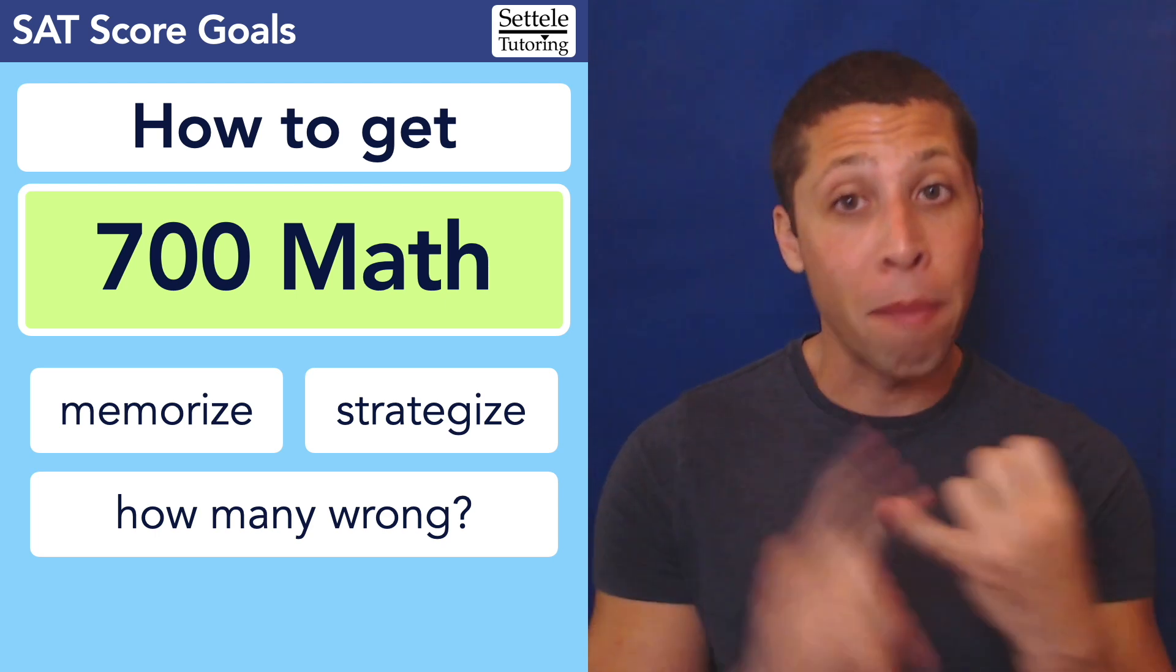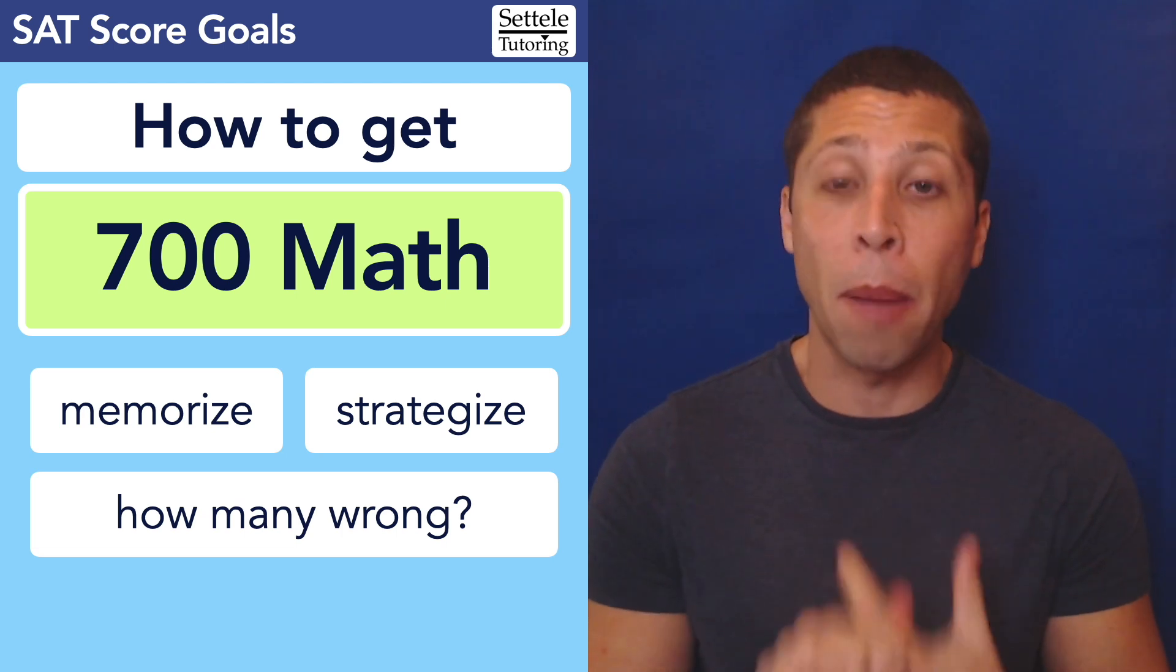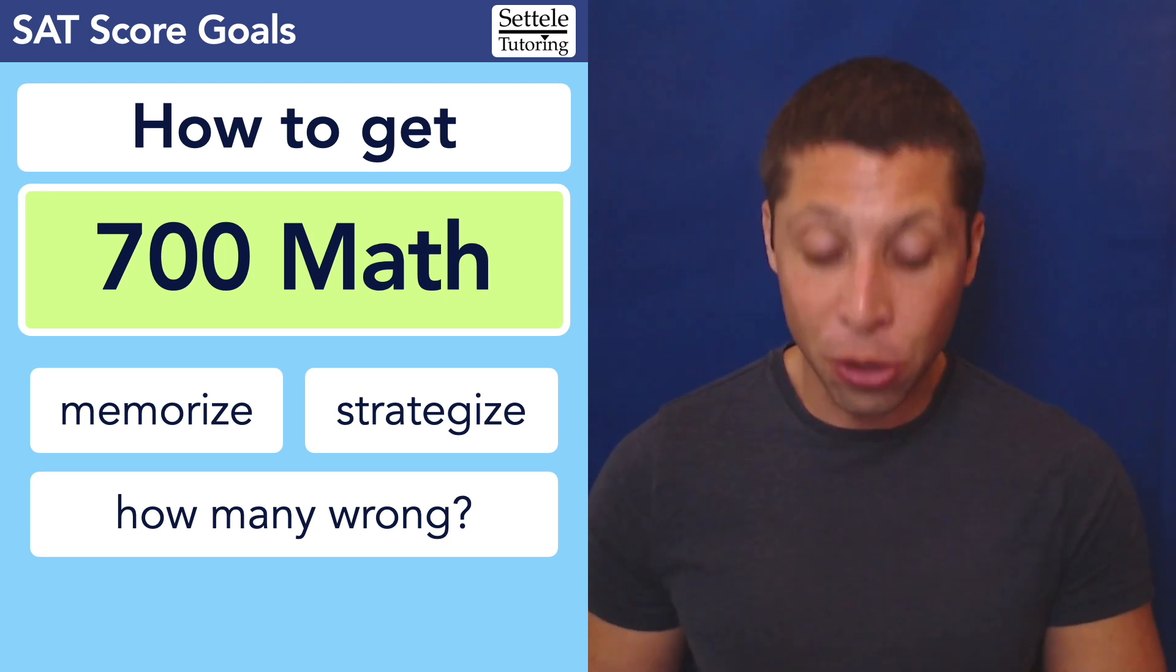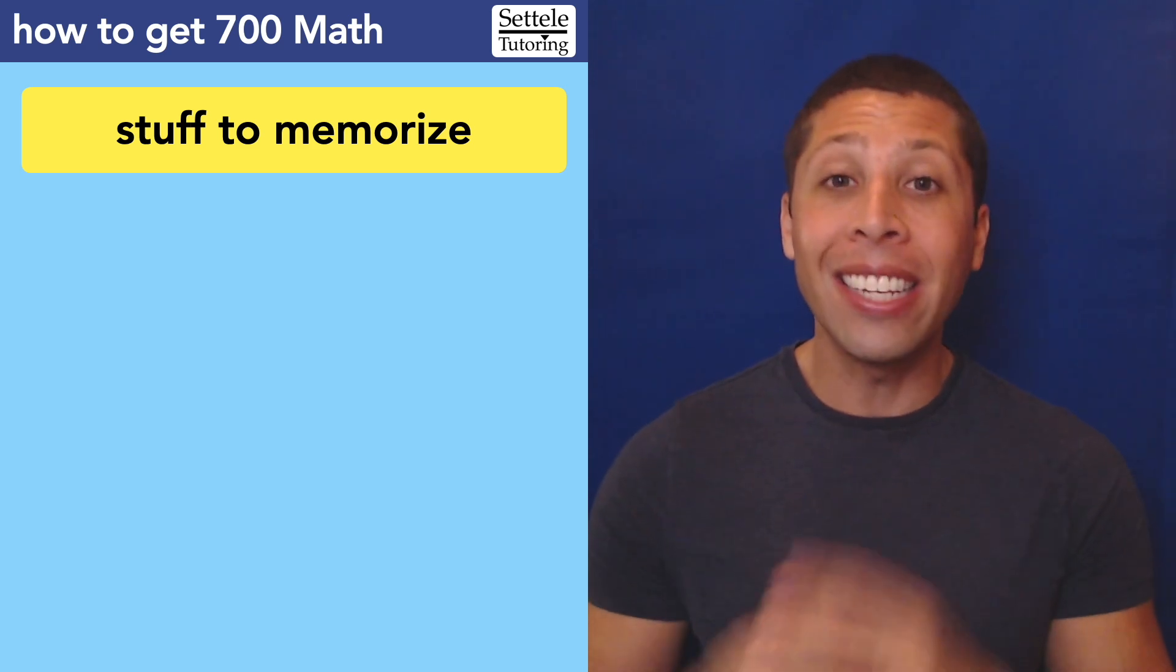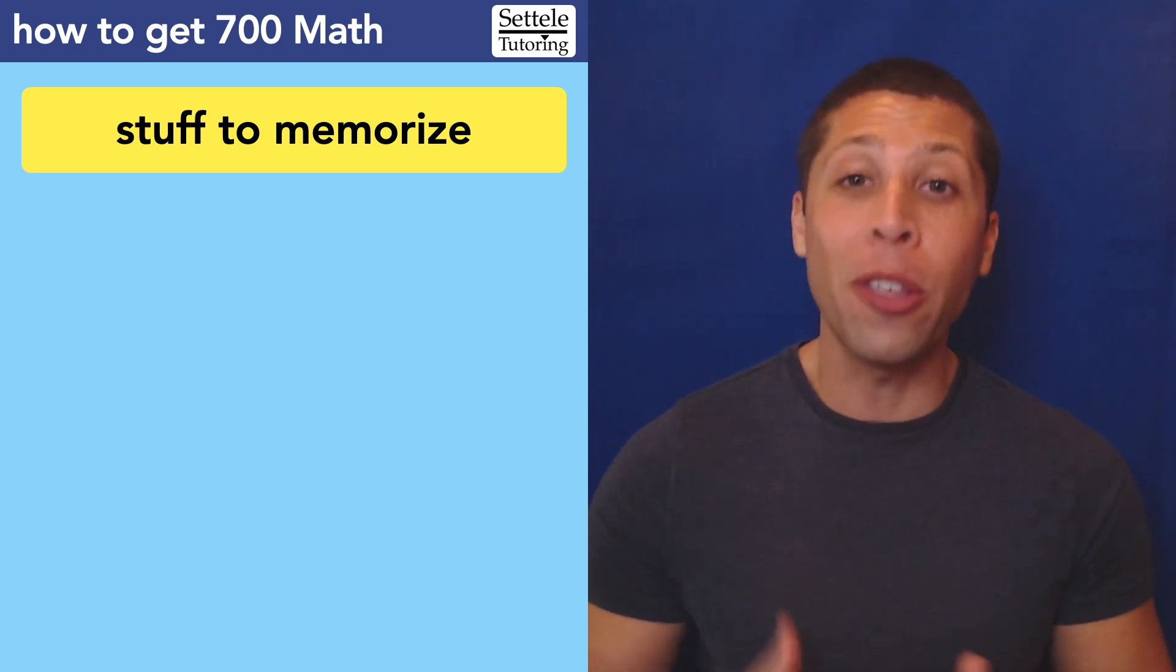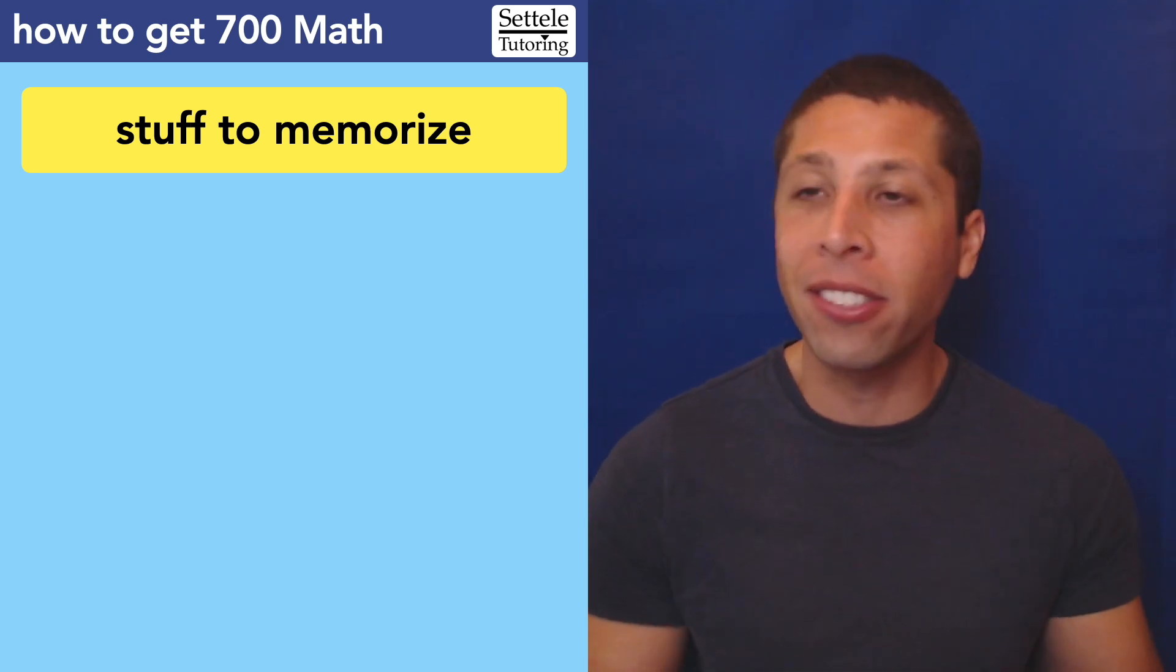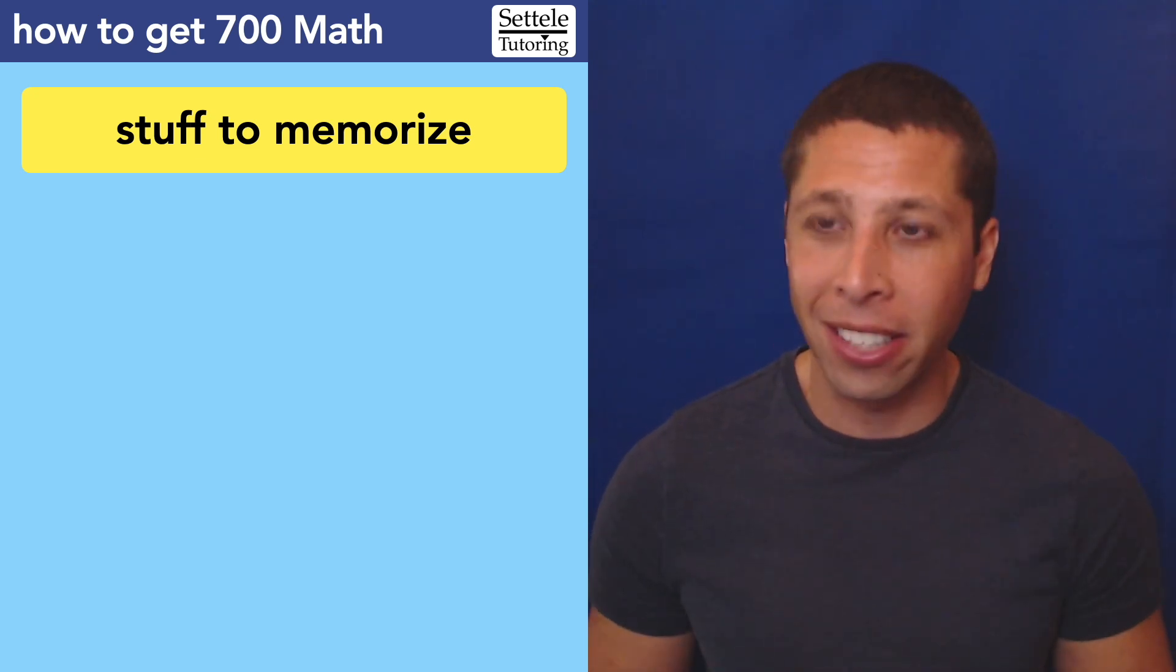So let's go over some things that you should memorize, some things you should strategize about, and I'll give you rough estimates of the number of questions you're allowed to get wrong to still get a 700. But before we get into the memorization, make sure that you watch my video on the 600s. Make sure you know that you are consistently getting in the 600s in math, because if you are not, then don't jump ahead to this. There's some basic fundamental ideas that you do not know yet, and you need to have mastered those things first before we can move on to the advanced topics that we need for a 700. So don't skip ahead. Make sure you're getting 600 consistently.